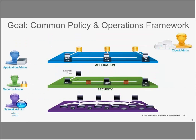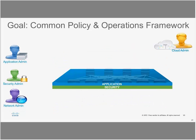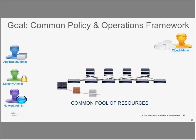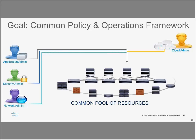Currently we have separate app, security, network, and cloud admins with segregated roles. ACI collapses everything into one unified network sharing a common pool of resources, giving every admin — whether security, network, or cloud — the same visibility. This enables a common goal of end-to-end policy implementation across ACI.